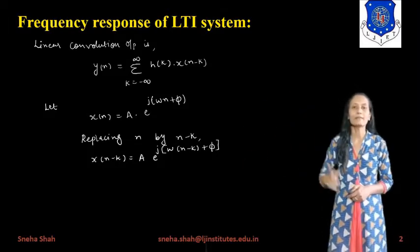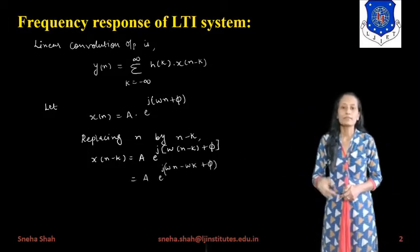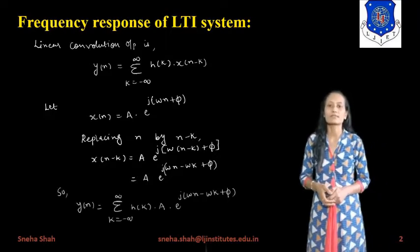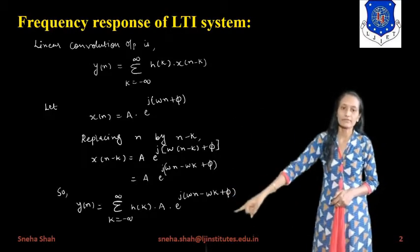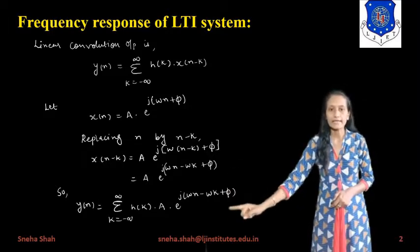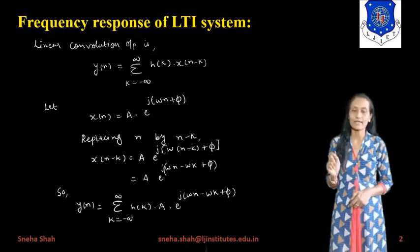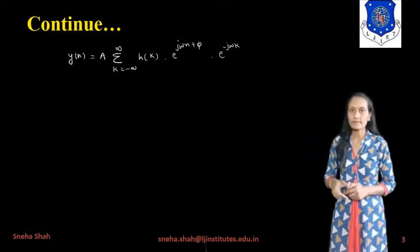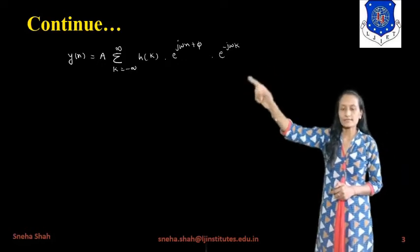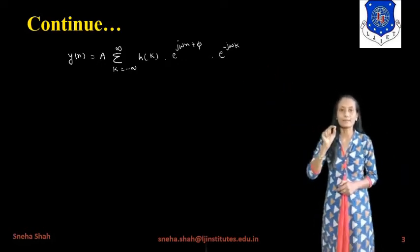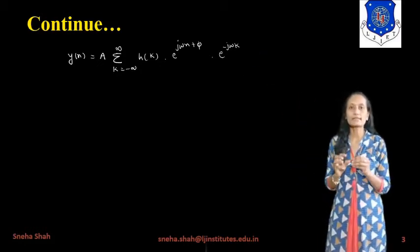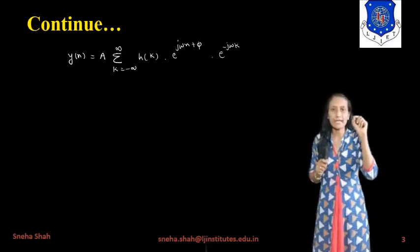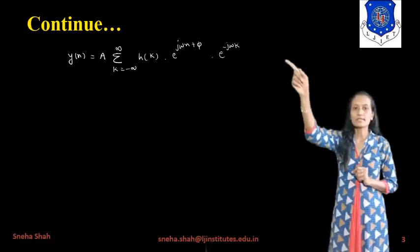Now putting this value into the convolution output equation, the term becomes y(n) = summation k equals minus infinity to infinity of h(k) * a * e^(j*omega*(n-k) + 5). Separating the exponent, since e^(a+b) = e^a * e^b, so we get y(n) = a * summation k equals minus infinity to infinity of h(k) * e^(j*omega*n + 5) * e^(-j*omega*k).